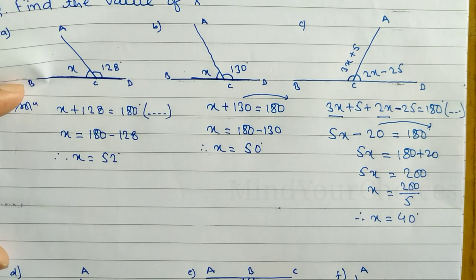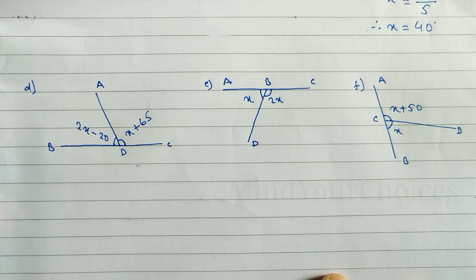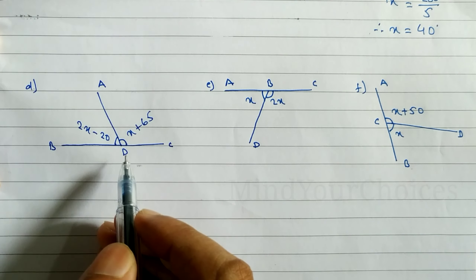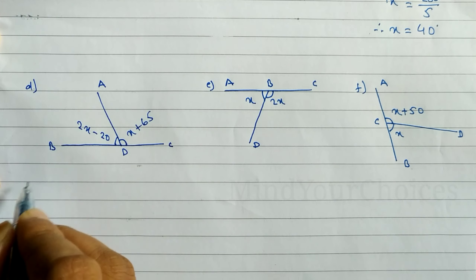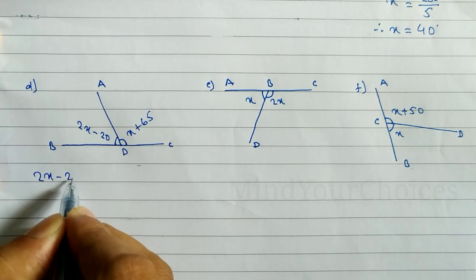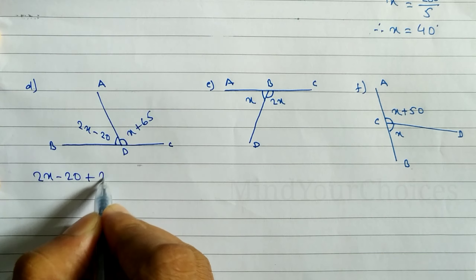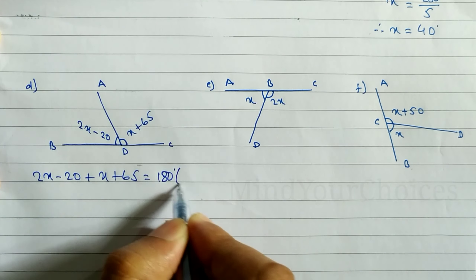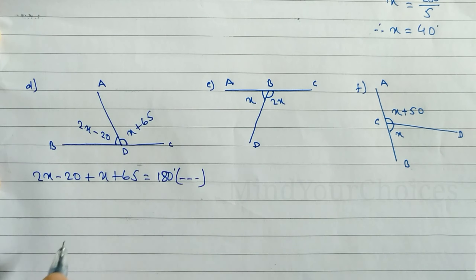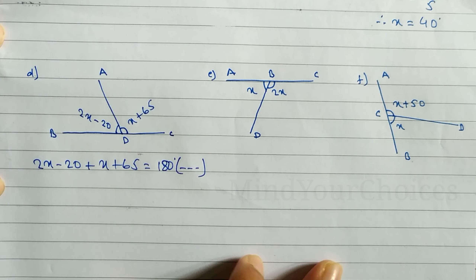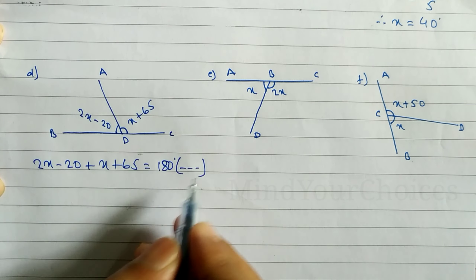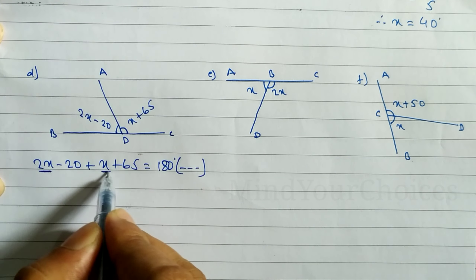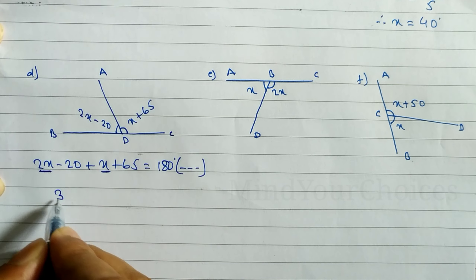Now look at the next three questions. Here also, when you add the two angles we get 180 degrees — reason: being supplementary angle. So we write 2x minus 20 plus x plus 65 is equal to 180 degrees. The reason is being supplementary angle, being straight line, or being linear pair.